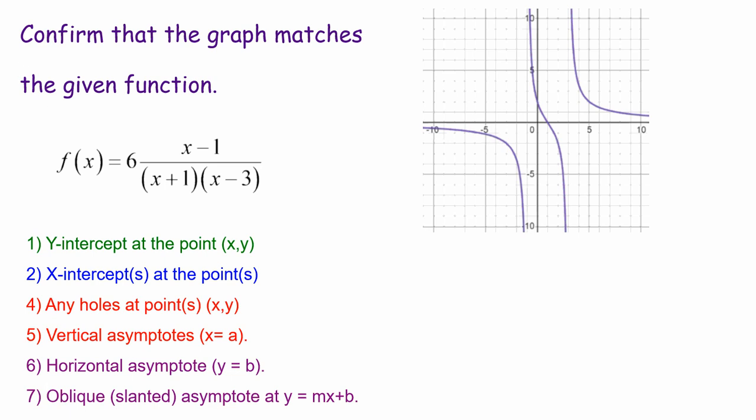So let's begin by finding the y-intercept. Now remember, anywhere you go on the y-axis, the x value is going to be 0. So all we need to do to find the y-intercept is to evaluate the function at 0. So we're simply going to plug in zeros everywhere we see an x. This would simplify to negative 1 in the numerator. There's a 6 out front. So 6 times negative 1 would be negative 6 in the numerator. And the denominator will have positive 1 times negative 3. So that'll be negative 3. And that all simplifies to a y value of positive 2. So we should have a y-intercept at the point 0 for x and 2 for y. And notice that in our graph, we do see on the y-axis a point that matches those coordinates.